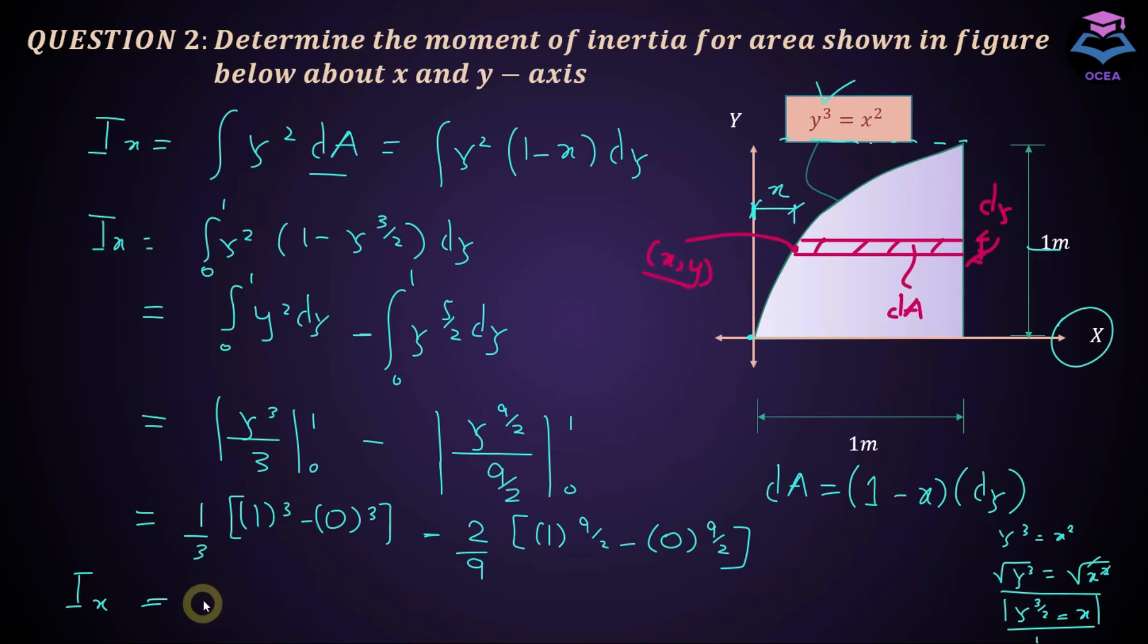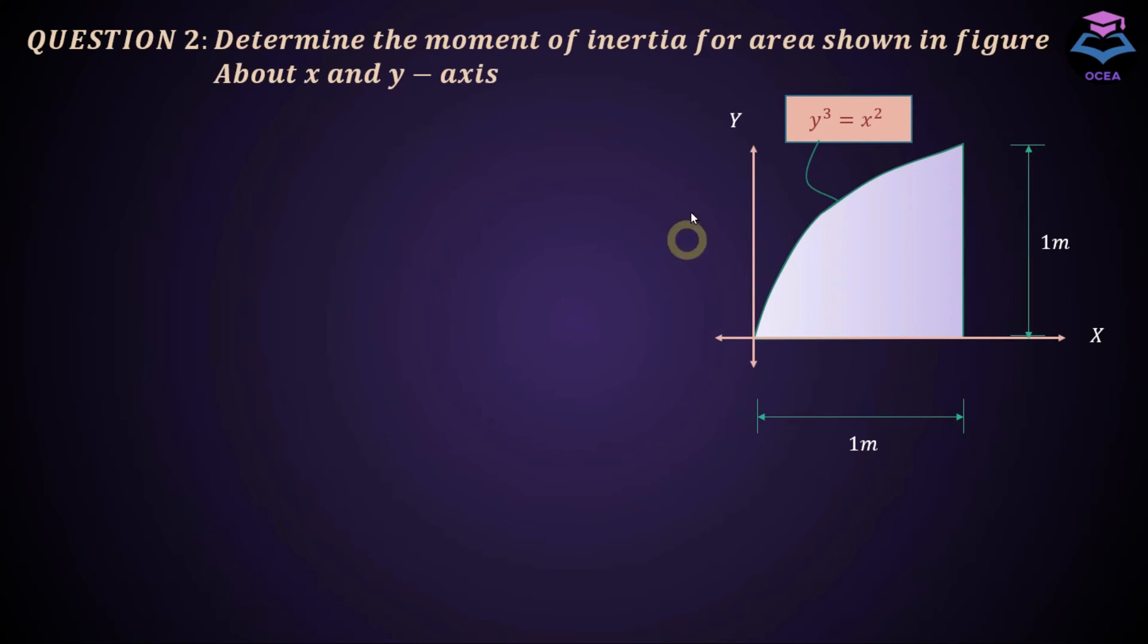I x is equal to 0.111 meter to the power 4. Since the units here are equal to 0 and in meter so IX would be in meter to the power 4 and that's your answer. To calculate moment of inertia about y-axis we need to draw a strip parallel to it.